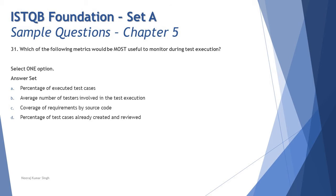Moving to the next question: which of the following metrics would be most useful to monitor during test execution? You need to recall what metrics are, how to read them, and understand what each metric is deriving. Based on that, you can determine which phase of the test process each metric belongs to. The question gives you the metrics in the options, and you just need to fit one into the test execution phase.